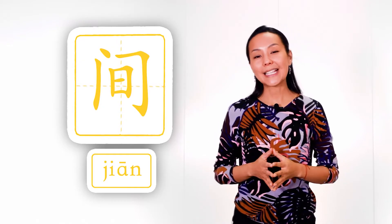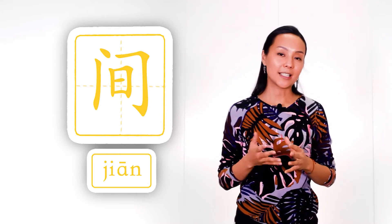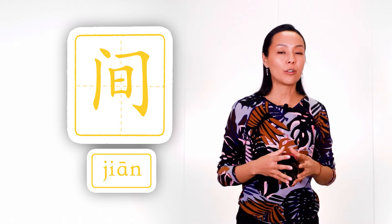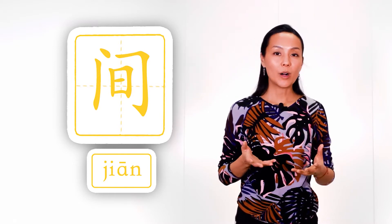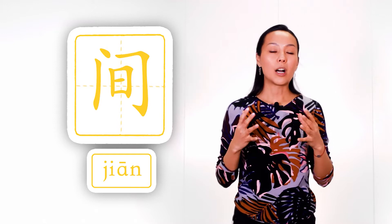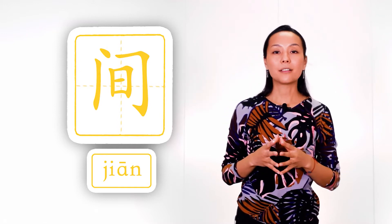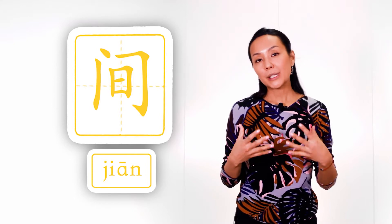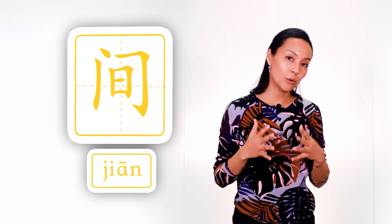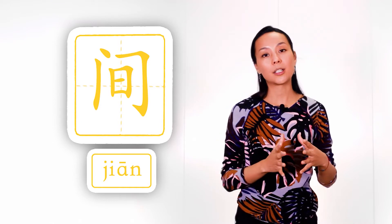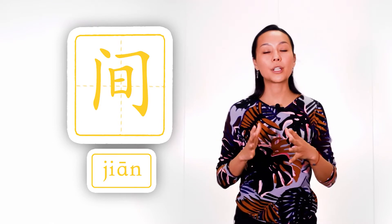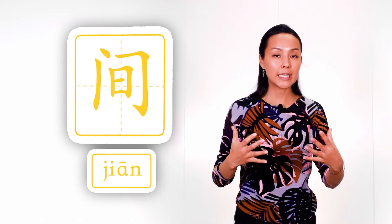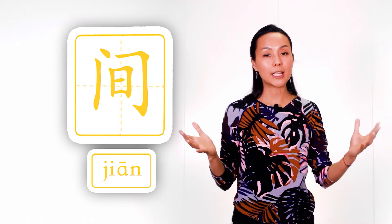The next example is 间 (jiān), meaning 'space in between' or 'room.' Inside our gates we see the sun. In ancient times, buildings didn't have windows because glass didn't exist. Houses had only doors, and sunlight could enter only through doors — and thanks to that light you could see the space between the walls.